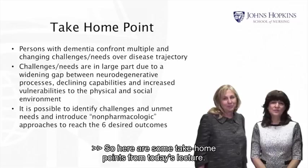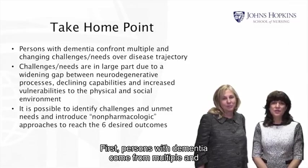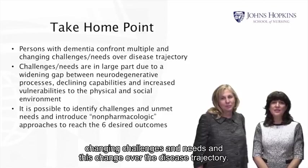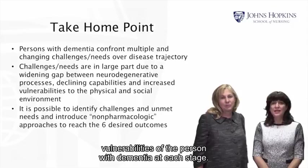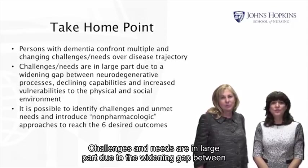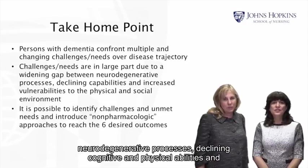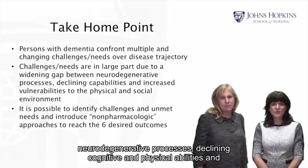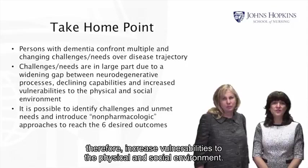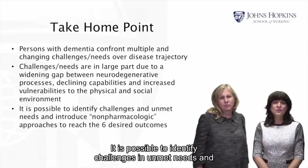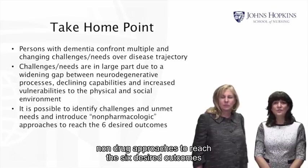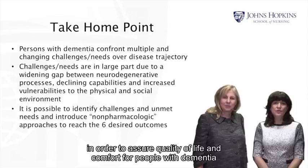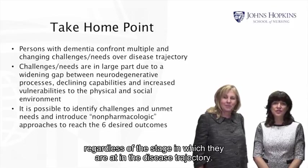Here are some take-home points from today's lecture. First, persons with dementia confront multiple and changing challenges and needs that change over the disease trajectory, so it's important to evaluate needs and vulnerabilities at each stage. Challenges and needs are in large part due to the widening gap between neurodegenerative processes, declining cognitive and physical abilities, and therefore increased vulnerabilities to the physical and social environment. It is possible to identify challenges and unmet needs and to introduce non-pharmacologic, non-drug approaches to reach the six desired outcomes, in order to assure quality of life and comfort for people with dementia regardless of the stage they are in. Thank you.